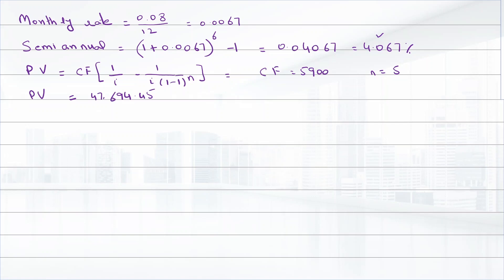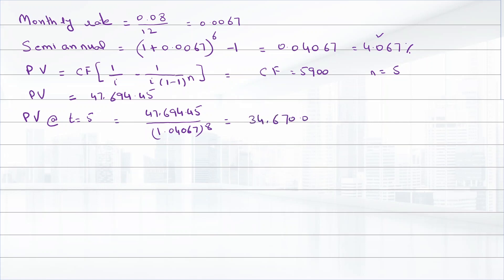The question asks for the value at various times. For the value five years from now (t = 5), we discount: 47,694.45 divided by (1.04067) raised to the power of 8, and the answer is $34,670.08.